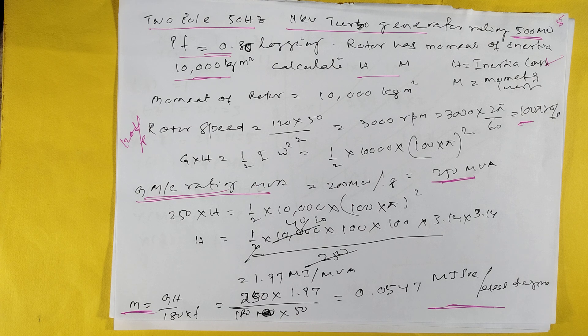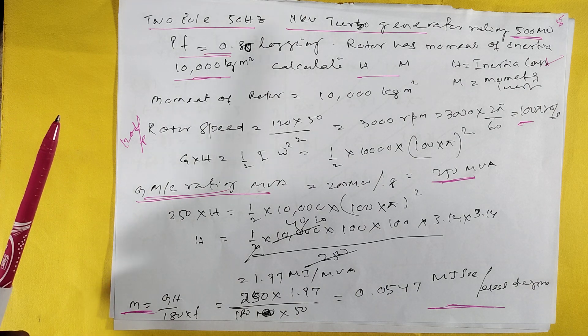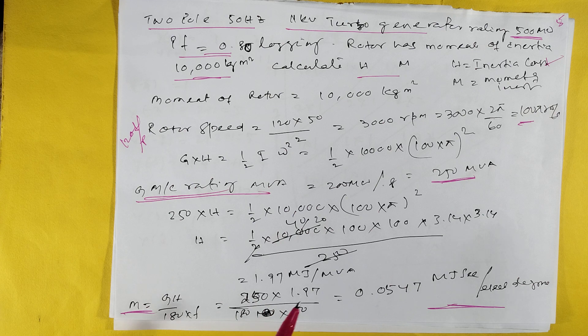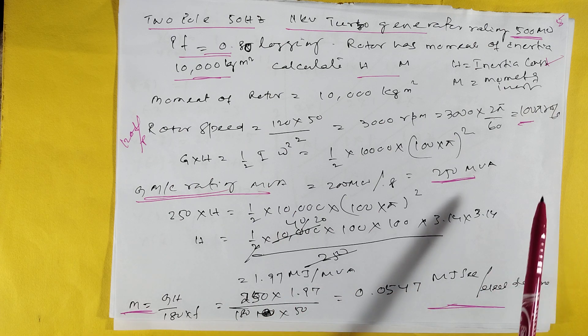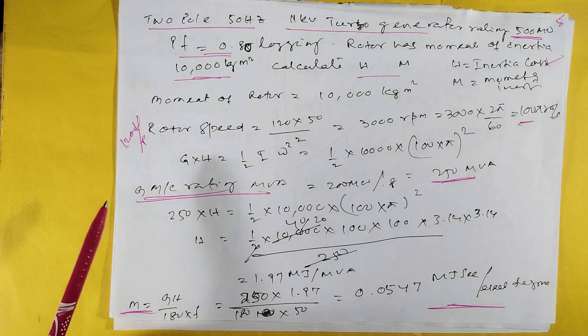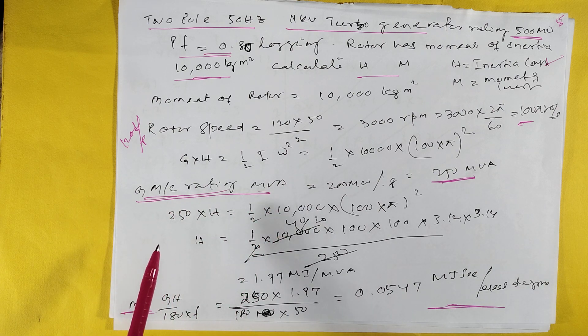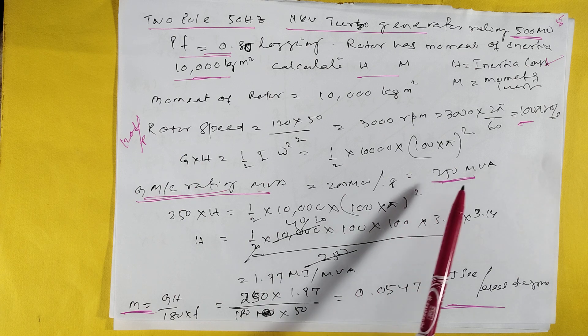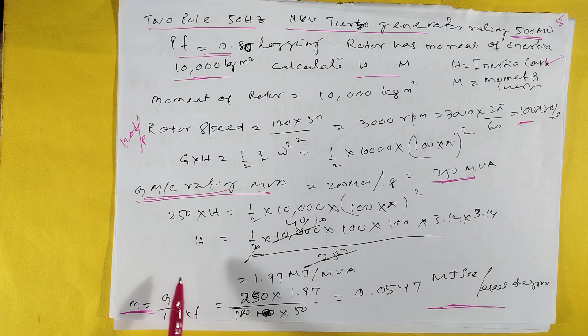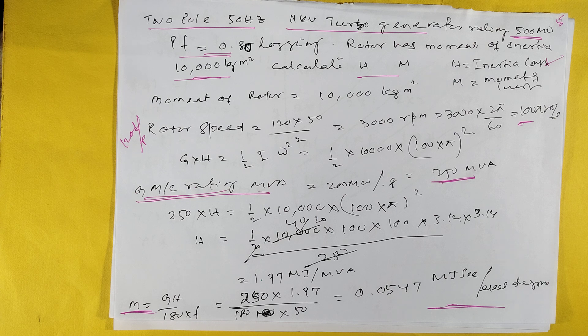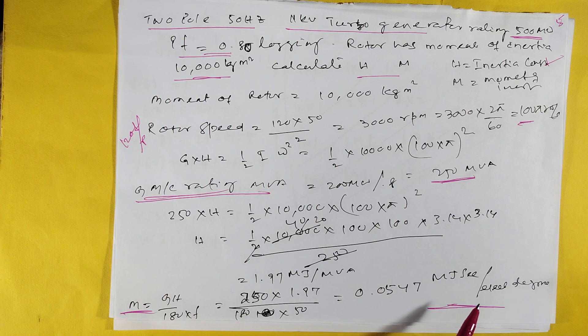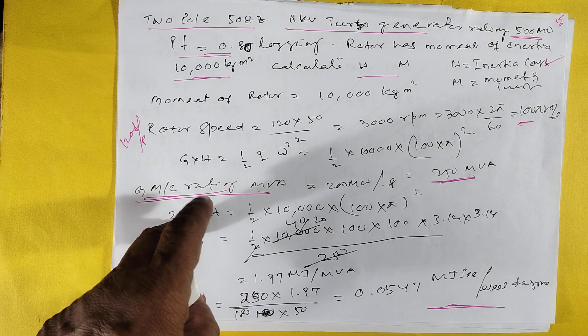A 500 MW turbo generator, power factor 0.8 lagging, rotor has moment of inertia 10,000 kg·m². Calculate H and M. Rotor speed = 120f/p, coming to 3000 rpm = 100π rad/s. H = ½Jω²/MVA. Putting everything, H is coming to 1.99 MJ/MVA. M = H/(180f) = 0.05 MJ·s/electrical degree.